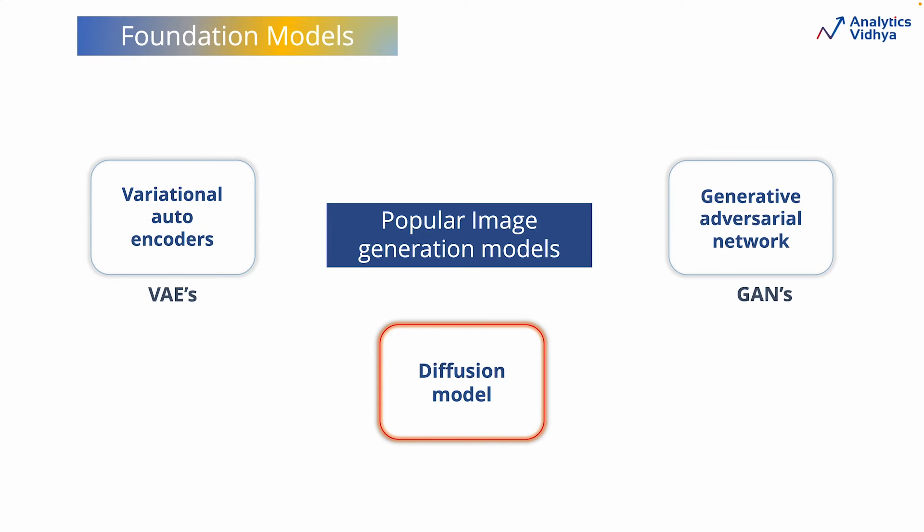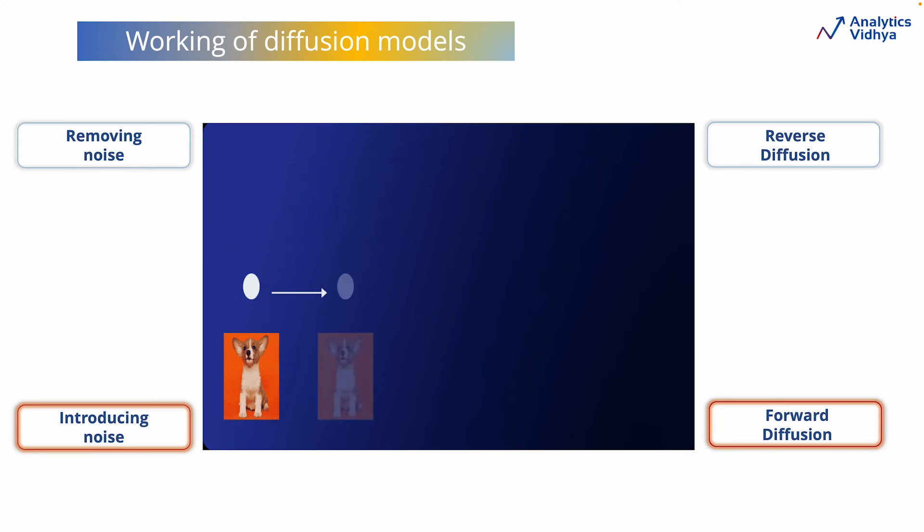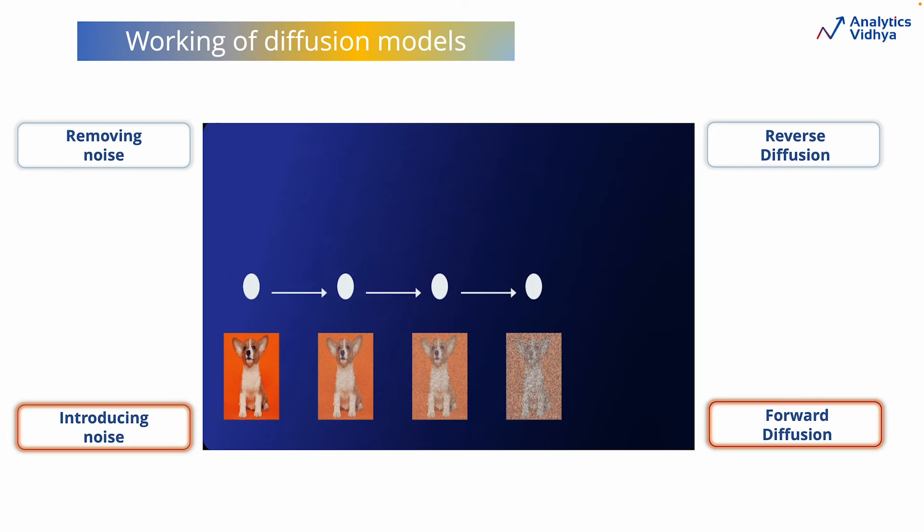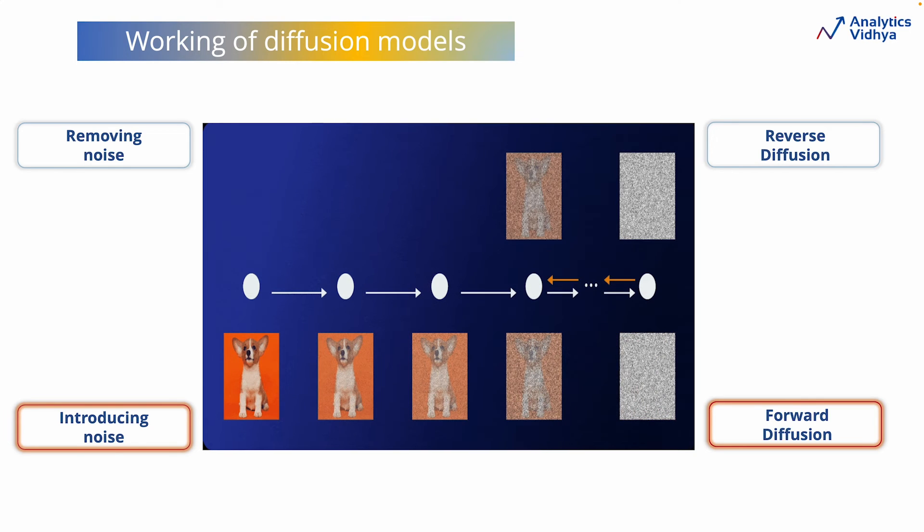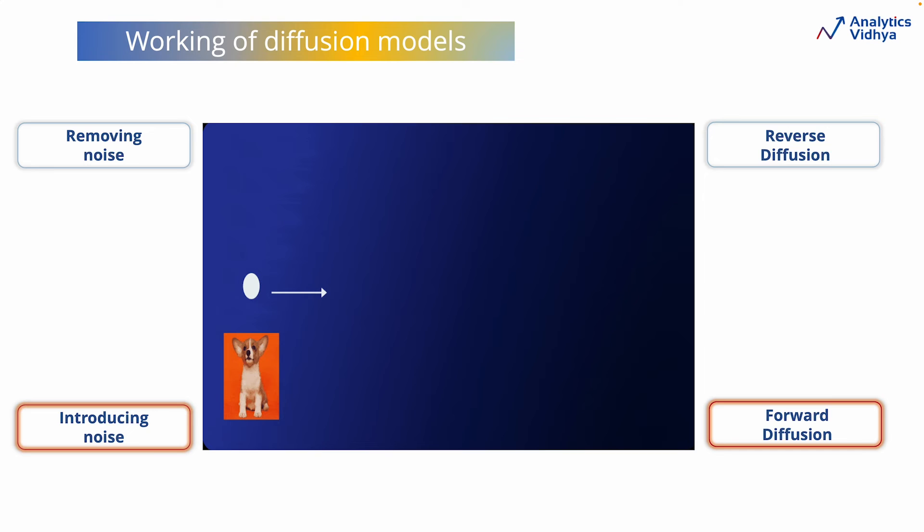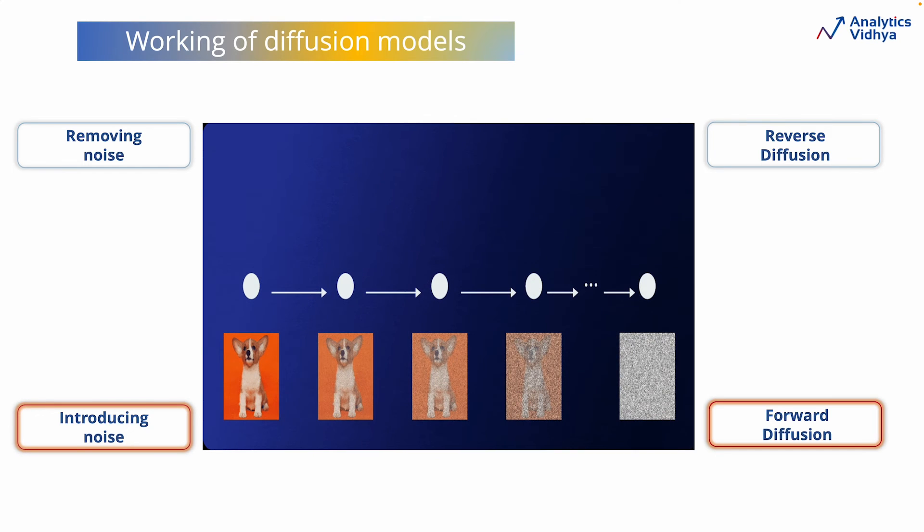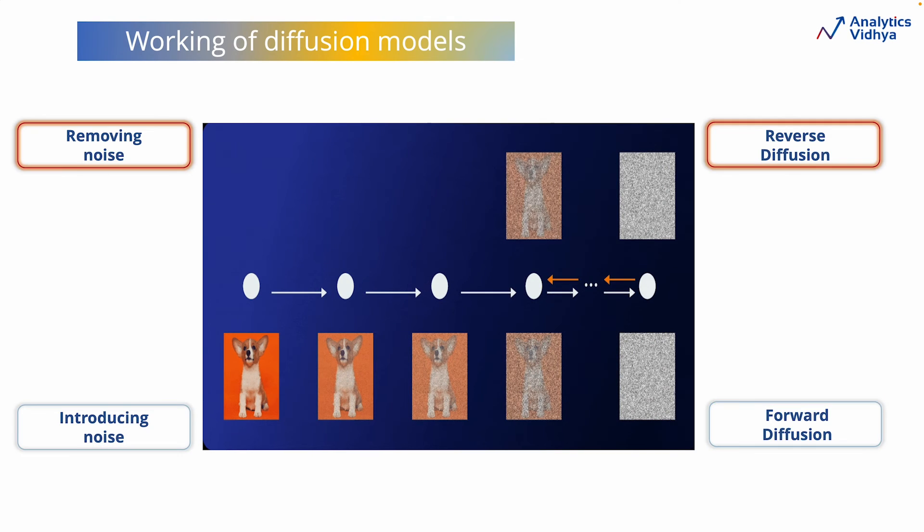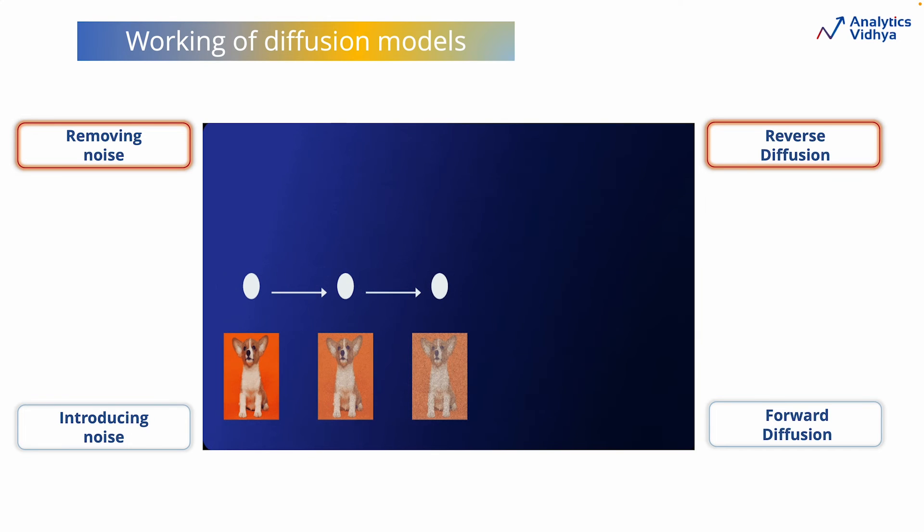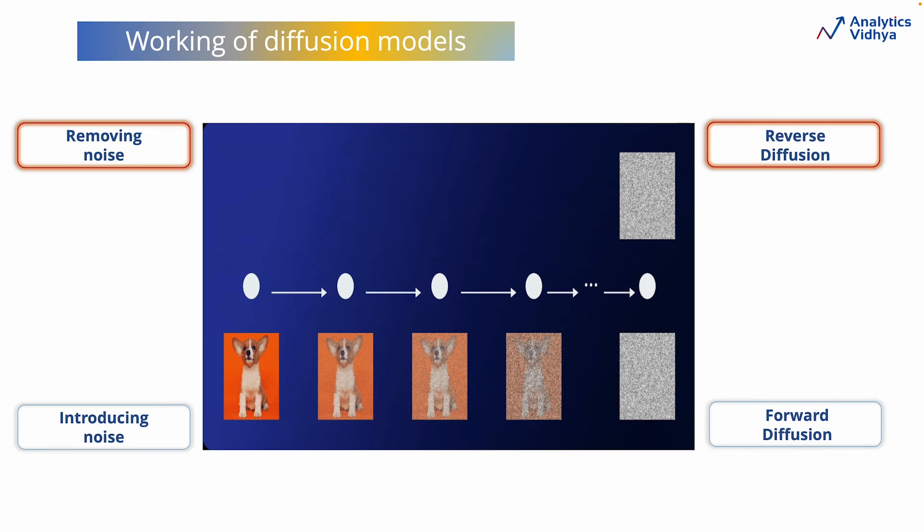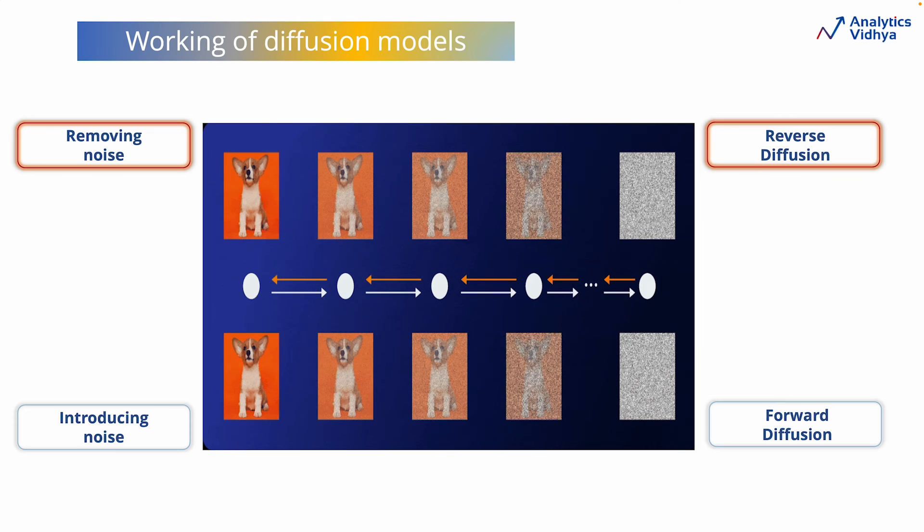Diffusion models can be quite complex to understand, but let's look at how these models work from a bird's eye view. Diffusion models are machine learning models that excel at generating realistic images by introducing random variations or noise through a process called forward diffusion. Then, through the reverse diffusion process, these models remove the noise from the images, providing us with the desired results.